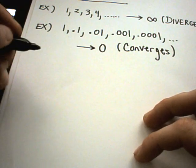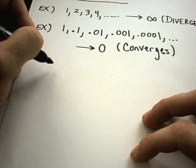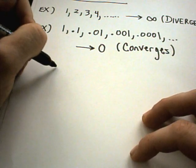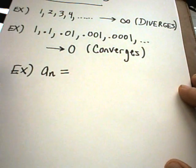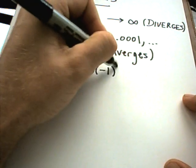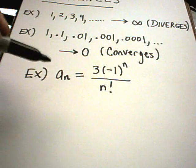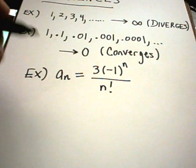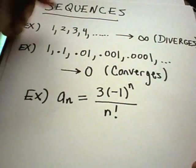Typically what they'll do is give you a formula. For example, we might have a_sub_n equals 3 times negative 1 to the n power over n factorial. That gives us a compact formula for what the a_sub_n terms are. The first term in your sequence is denoted a_sub_1.